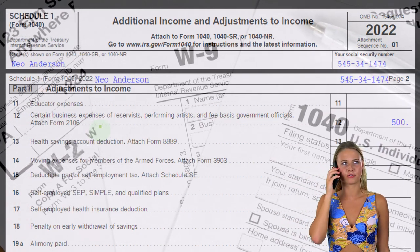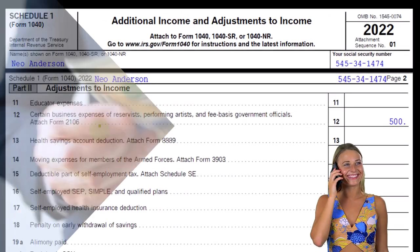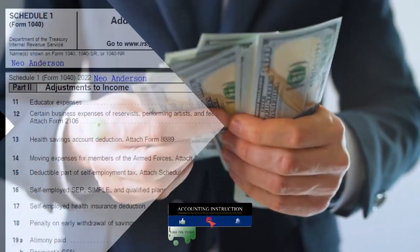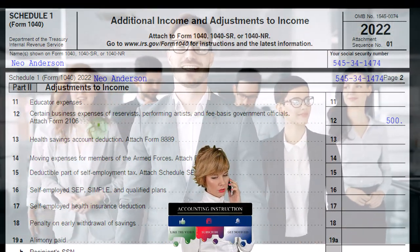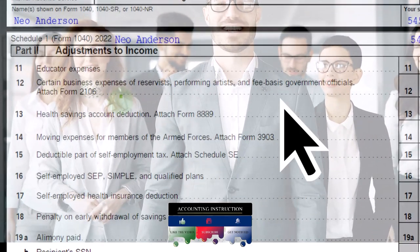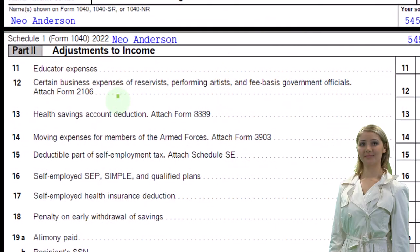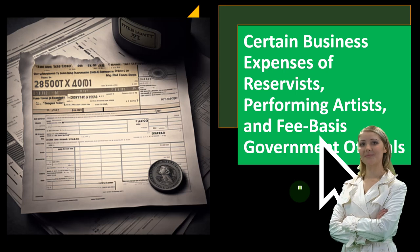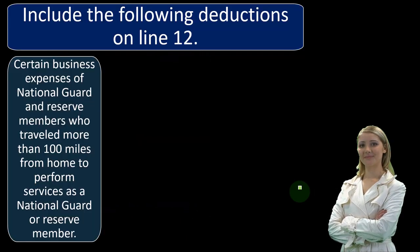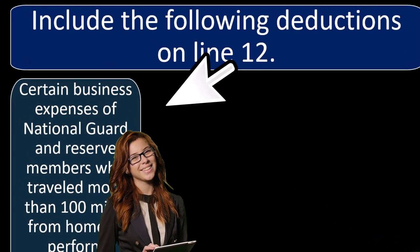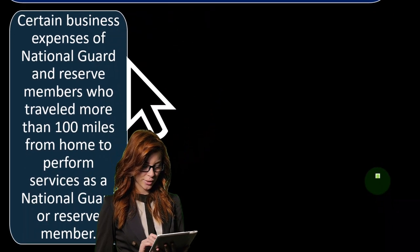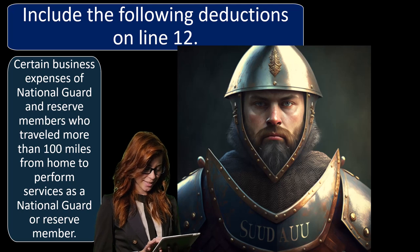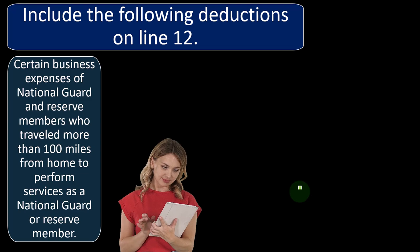Line 12 covers certain business expenses — which are natural expenses but limited for W-2 employees — specifically for reservists, performing artists, and fee-basis government officials, with Form 2106 attached. The qualifying deductions on line 12 include business expenses of National Guard and reserve members who traveled more than 100 miles from home to perform services as National Guard or reserve members. This is a very specific type of situation.